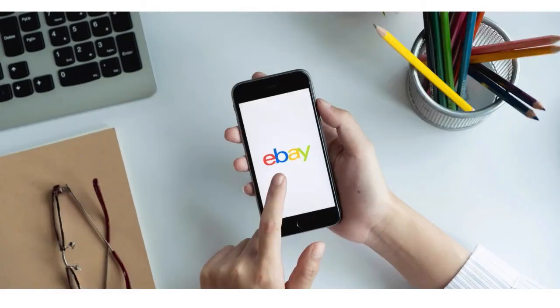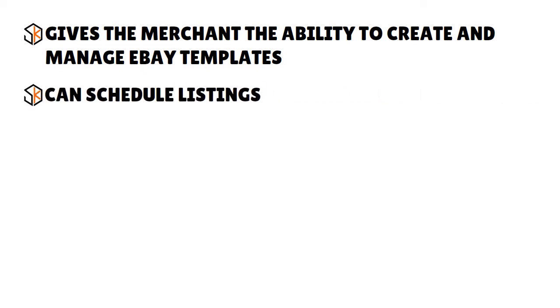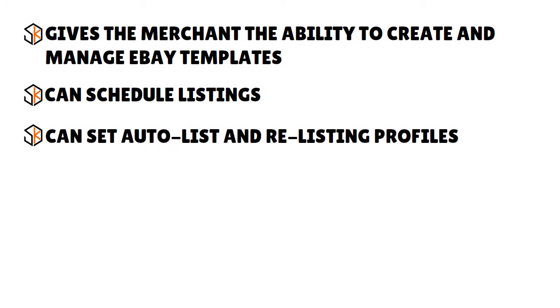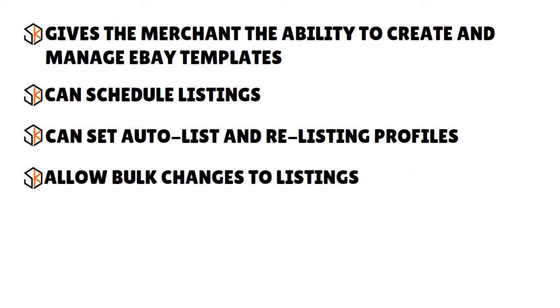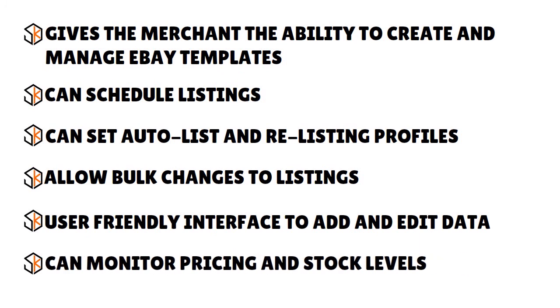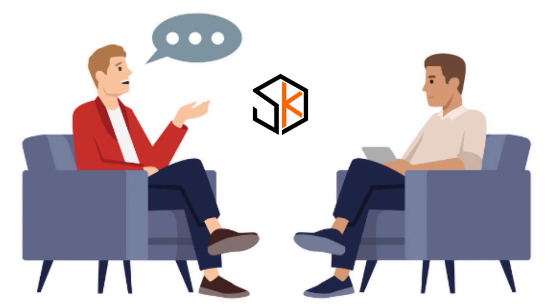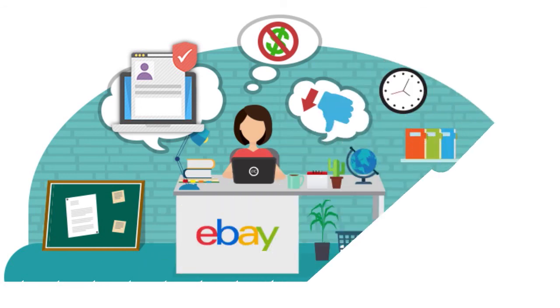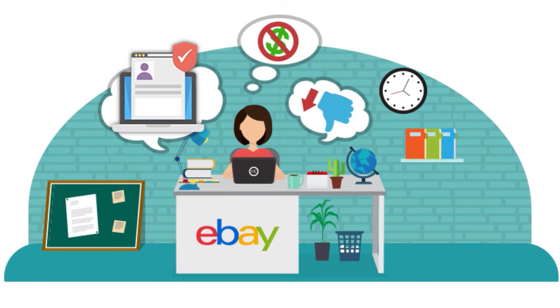The essential features to look for in an eBay listing software tool include: the ability to create and manage eBay templates, schedule listings, set auto-list and re-listing profiles, make bulk changes to listings, have a user-friendly interface to add and edit data, and monitor pricing and stock levels. The right choice largely depends on your e-commerce business size — if you're selling on eBay by yourself you may be fine with basic software.